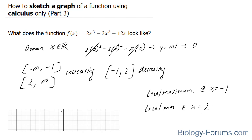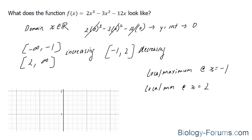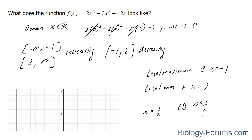One thing that we did not state in part one and part two was the point of inflection, which is somewhat important when it comes to sketching. Since the critical number for the second derivative was x equal to one-half, and it was concave down when x was less than one-half, and concave up when x was greater than one-half, the point of inflection — the turning point — will occur at x equals one-half.